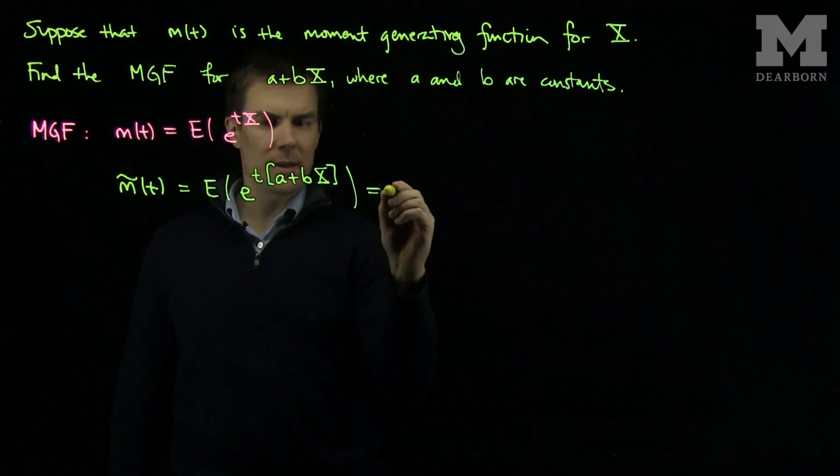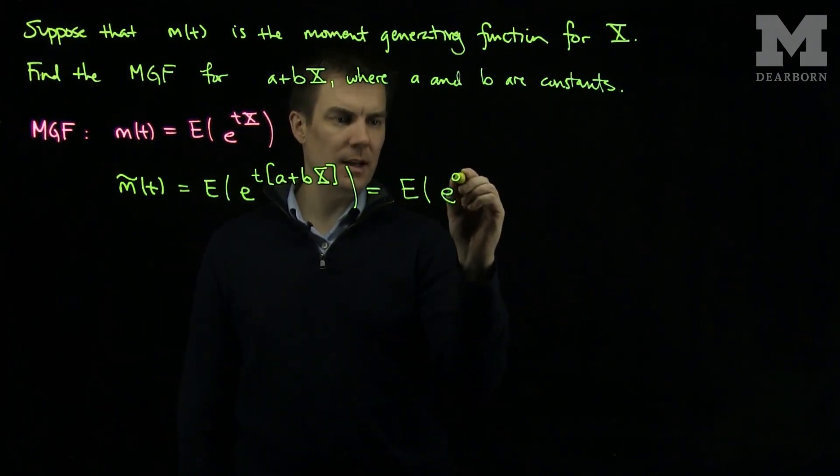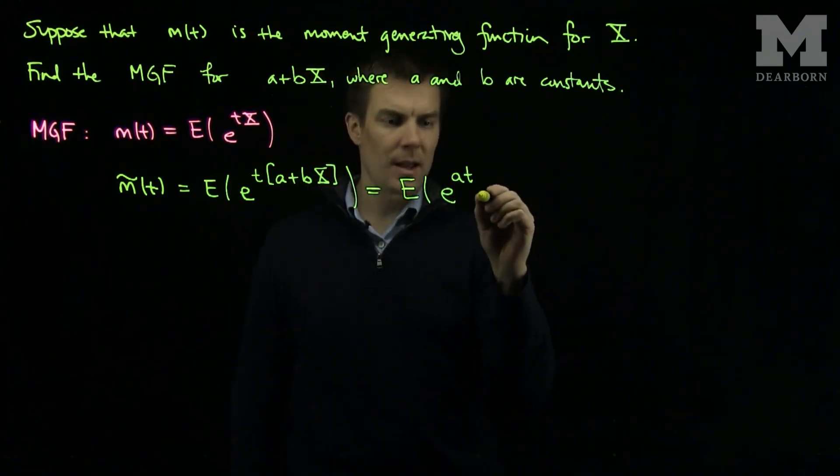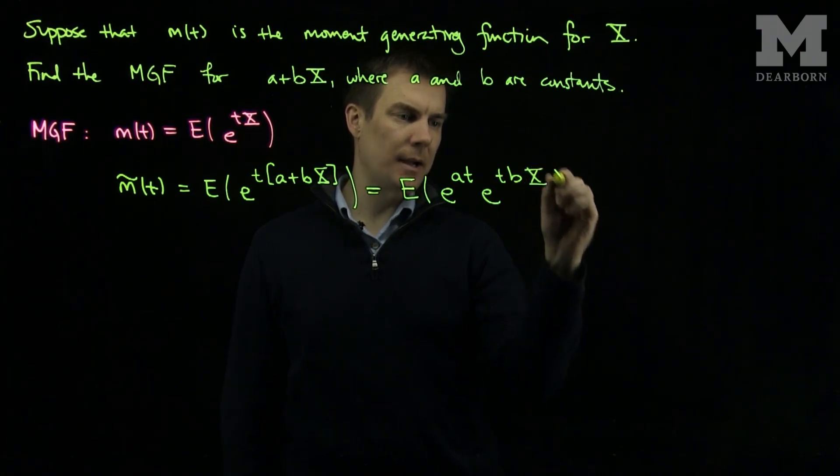We can see that this will be the expected value of e to the at times e to the tbX.